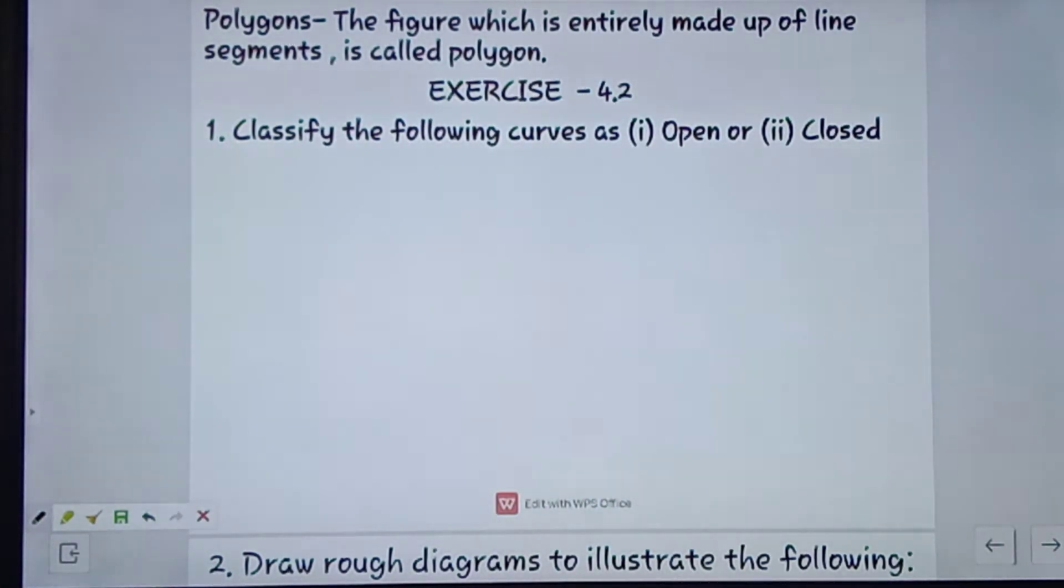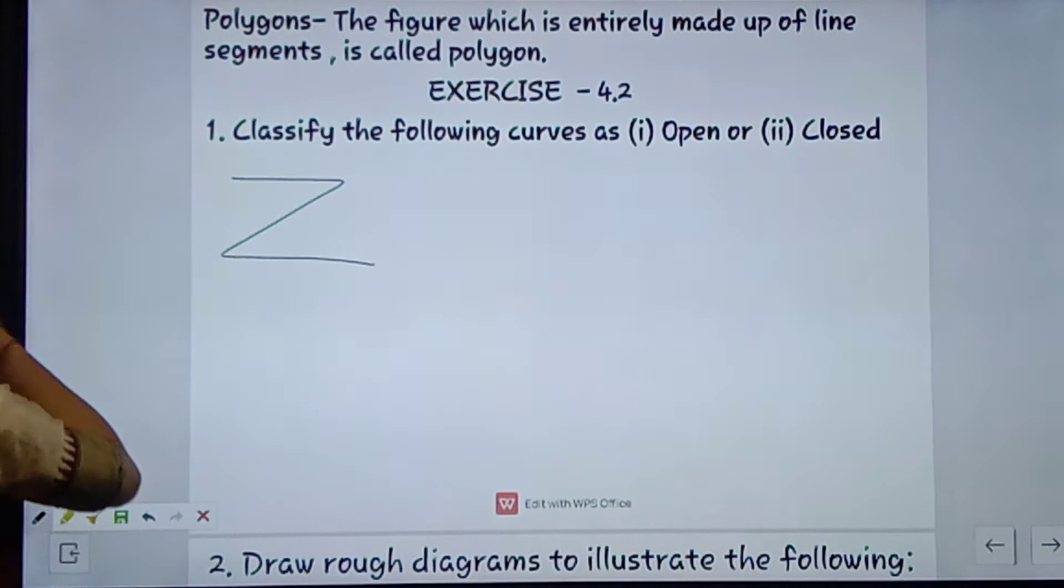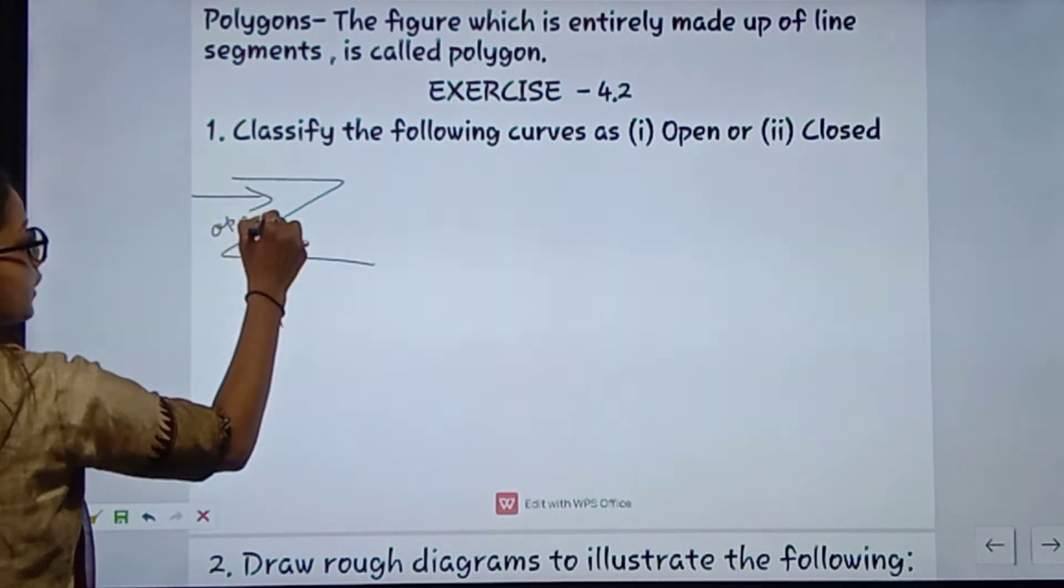Exercise 4.2 - classify the following curves as first is open curve and second is closed curve. First figure is Z. To bita, Z is open curve na, yahan se ye open hai na, to open curve.